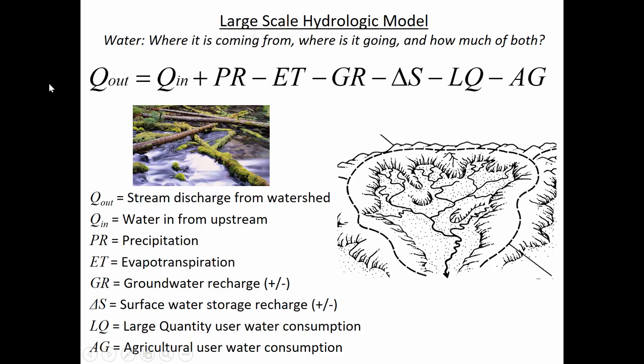This is just a conceptual idea of where the water is coming from and where it's going. What we want to do is create a balance so that we can know, over time, how much is in each of these categories. Evapotranspiration is maybe the most difficult to model because there are so many factors that change over time to increase and decrease it.